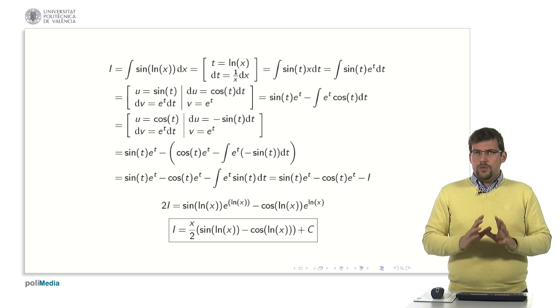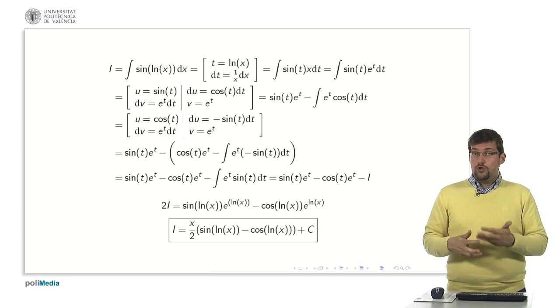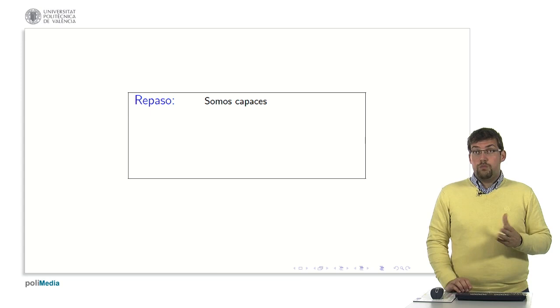Let's never forget that once we do all this calculation what we are actually doing is calculating a primitive. When we finish calculating that primitive what we have to do is to always add the constant of integration that gives us all the possible primitives of the function. This has been the example.